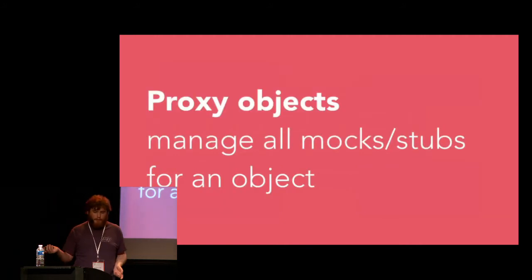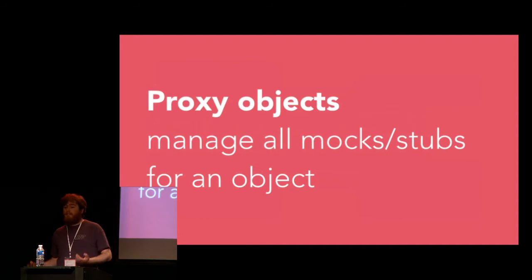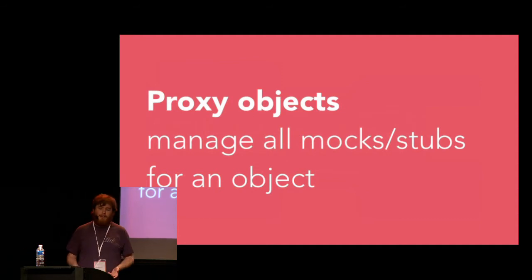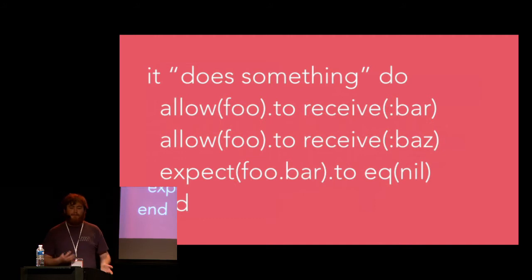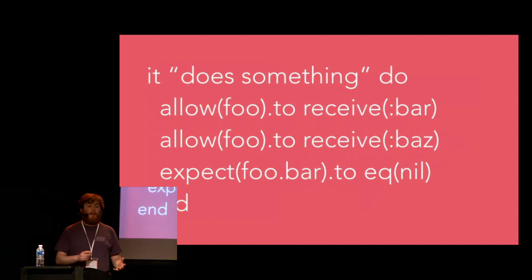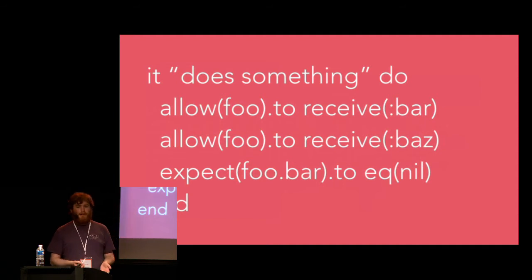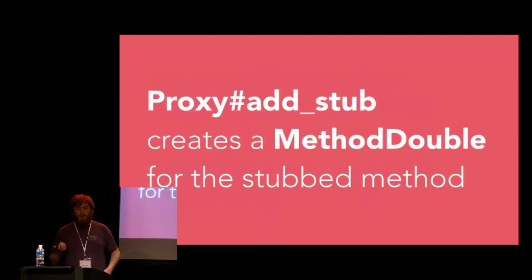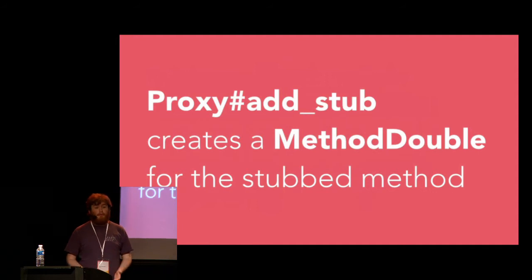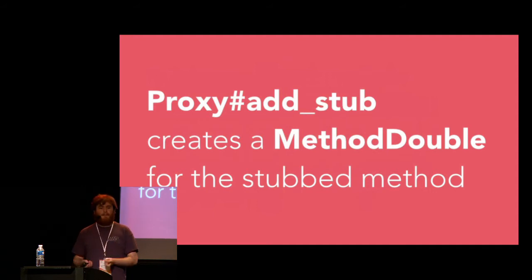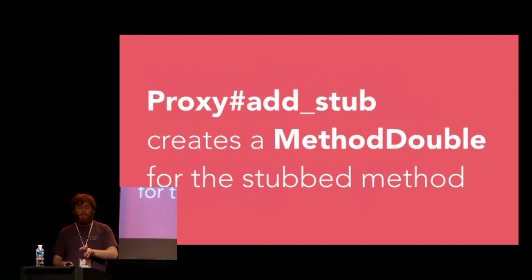It's the job of the mock proxy to manage all the metadata around stubs and mocks for any individual object within the lifecycle of a test. The mock proxy will have an add stub method invoked on it, which tells the proxy it's time to set up the stub. If you write a test with allow foo to receive bar and allow foo to receive baz, we'll only ever create one mock proxy for that foo object despite creating two expectations. For each object and each test, there will only ever be one mock proxy.